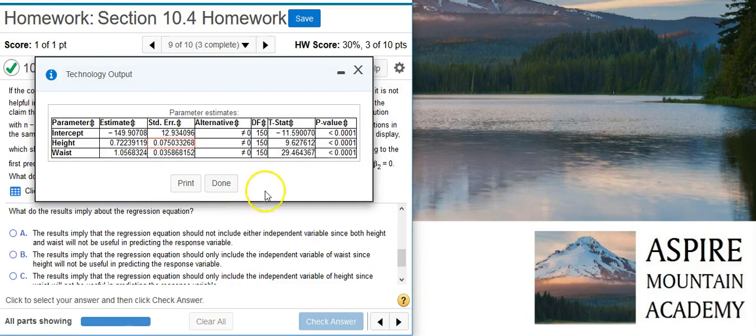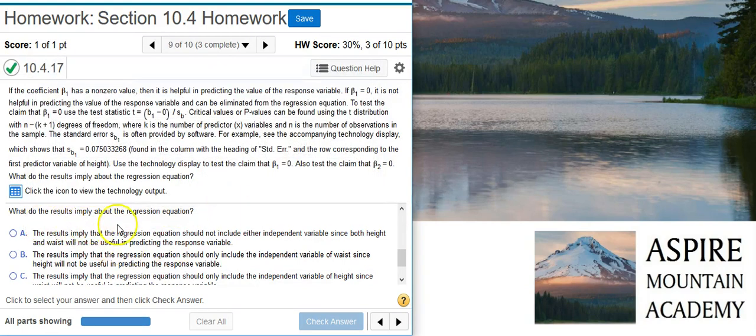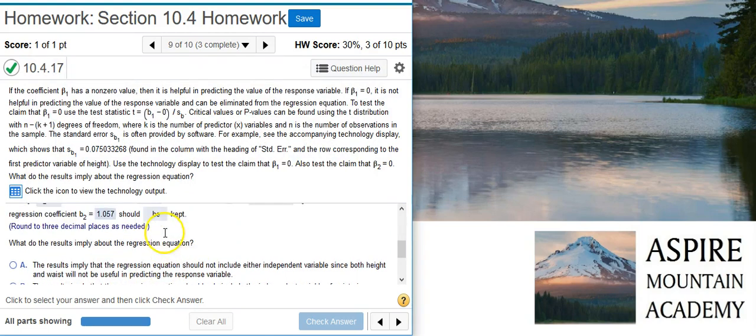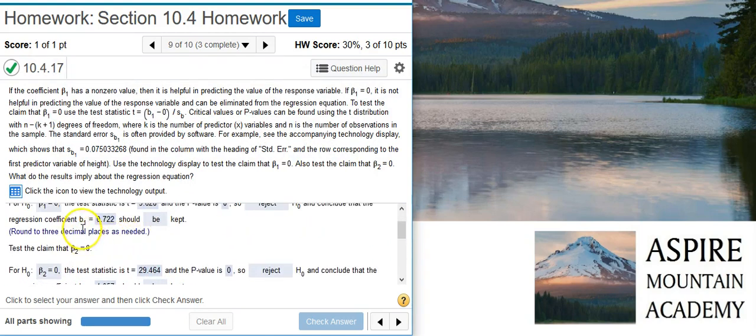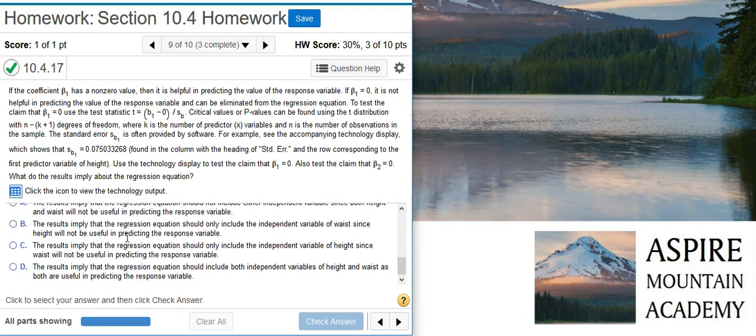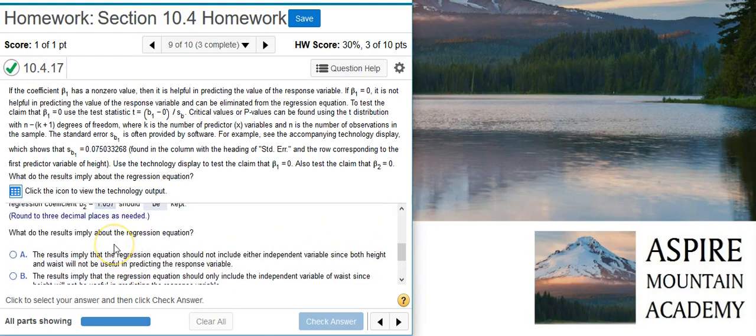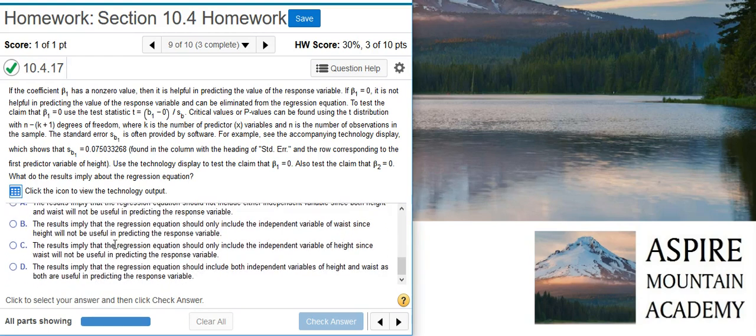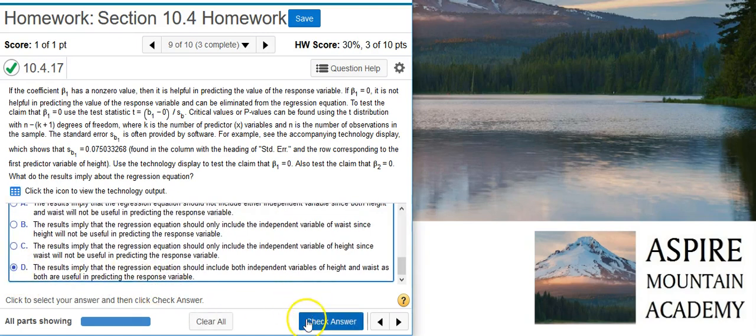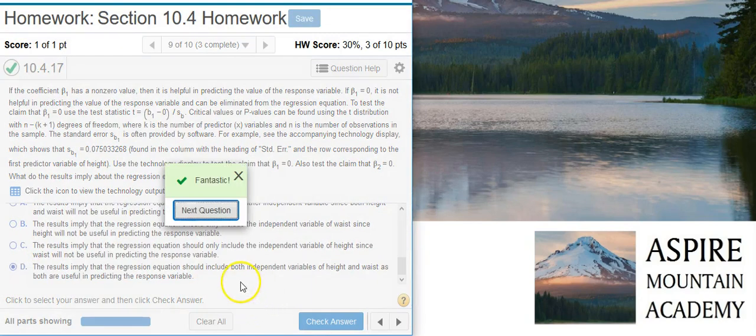And now the last part of this problem asks, what do the results imply about the regression equation? Well, we've kept both of the coefficients from our regression equation, so that tells us that we should include both of them in our regression equation. So let's look through our answer options, and I'm going to select the answer option that says we should include both of them, and that's this one here. Fantastic!